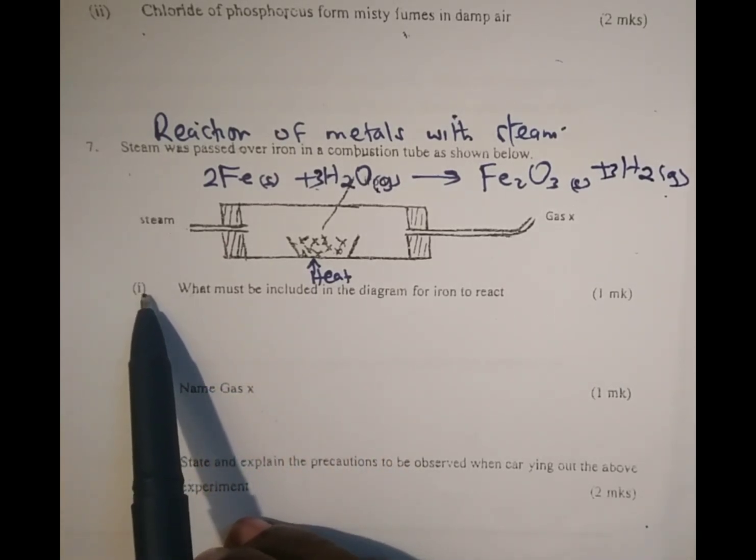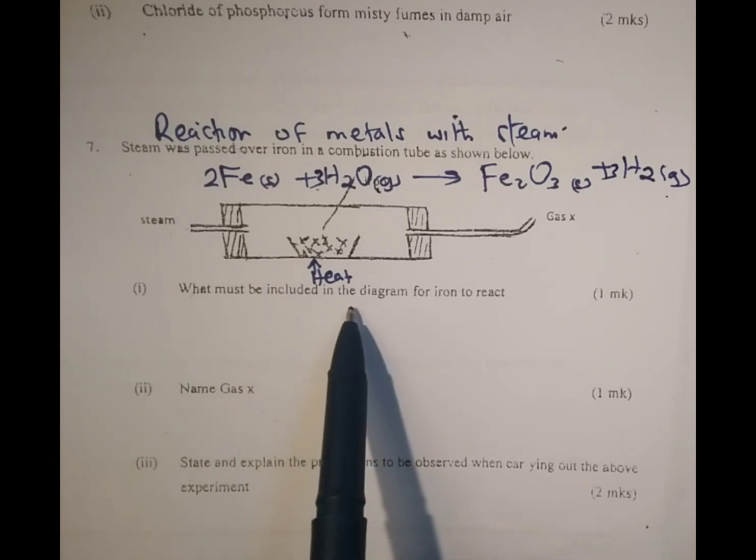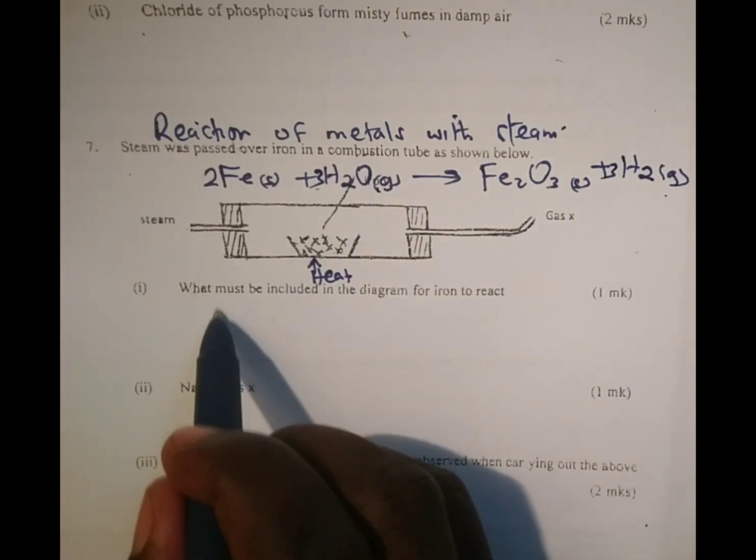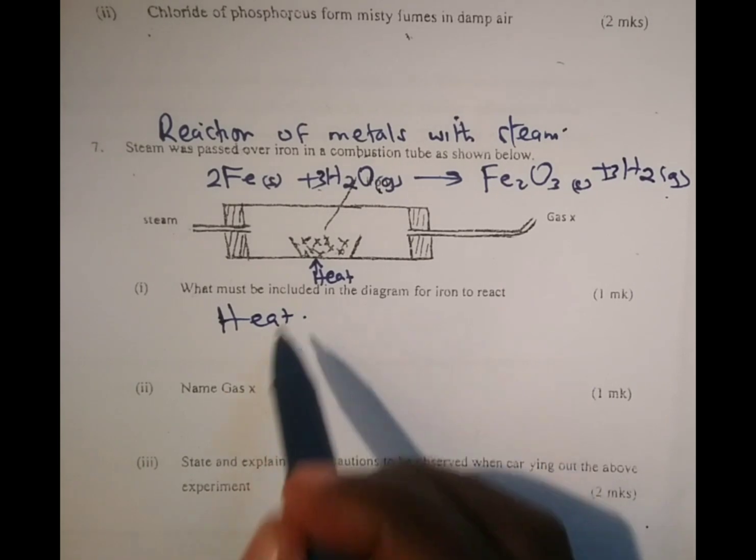Roman 1 of the question, what must be included in the diagram for iron to react? Automatically we have to include heat.